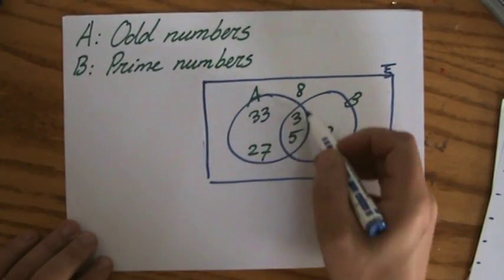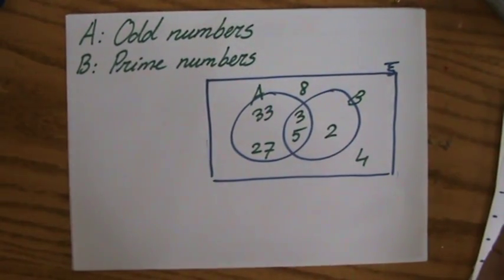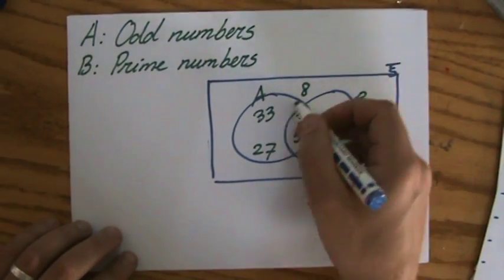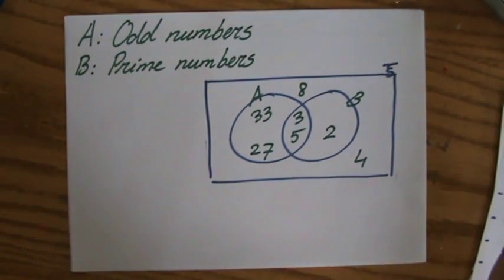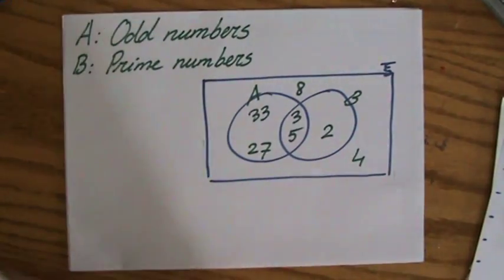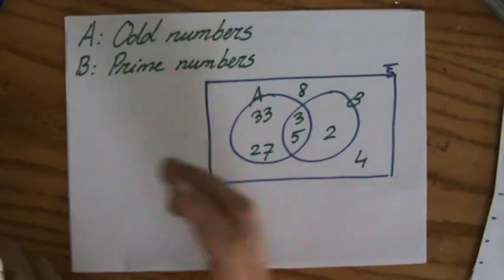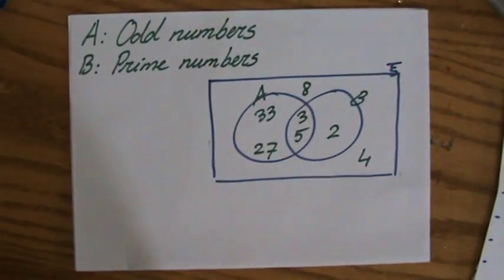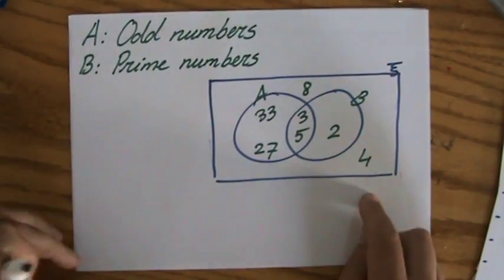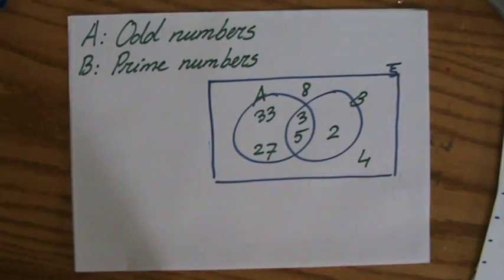Now what do I have in set A? I have odd numbers. And what do I have in set B? I have some prime numbers. And I have also some numbers floating around it. Of course, I know there are more odd numbers and more numbers that could be here, but I've just chosen a few of them.